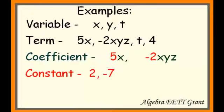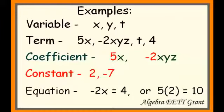A constant is when a number stands alone, such as 2 or negative 7. Notice they do not have variables with them. An equation is something that has an equal sign, so it could be things like negative 2x equals 4 or 5 times 2 equals 10. Both of these have equal signs, so both of them are examples of equations.